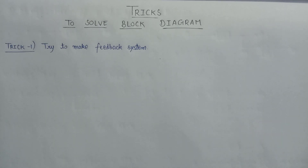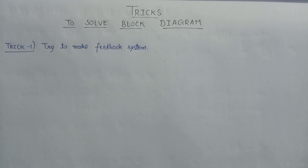Welcome. In this lecture we are going to learn about the tricks to solve the block diagram very easily and in an efficient way. Trick number one says that we just need to try to make a feedback system if possible. While solving the block diagram, we try to make a feedback system if it is possible. There are two types of feedback system.